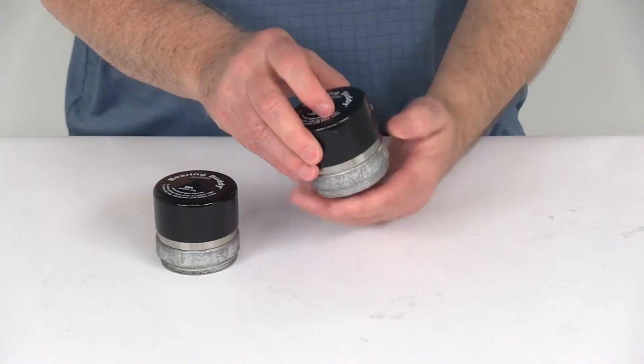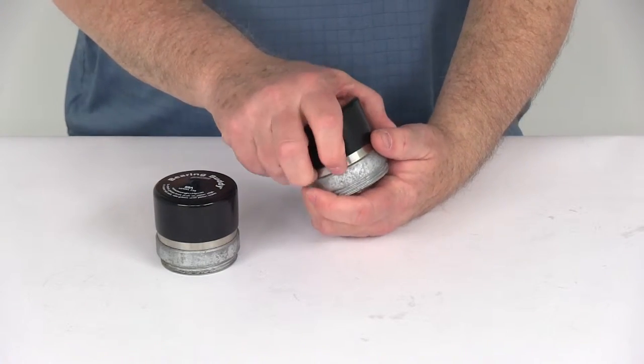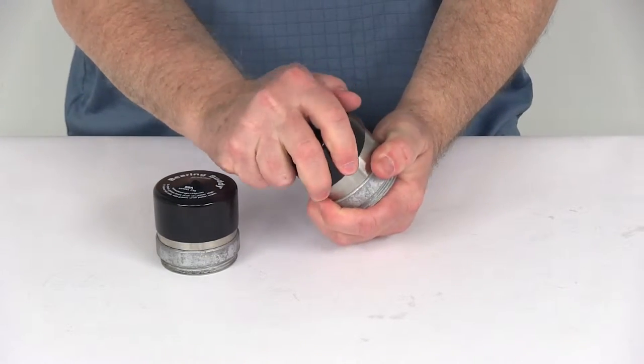Now the bearing buddy design is a very easy way to protect your bearings by keeping the water out and ensuring that enough grease is in your hub.